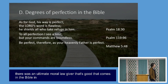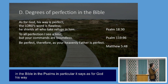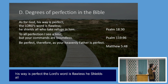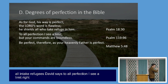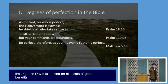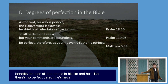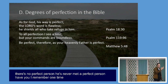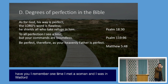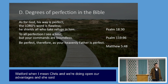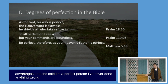How would we ever be able to measure morality unless there was an ultimate moral law giver? That's God. In the Psalms it says: 'As for God, his way is perfect; the Lord's word is flawless.' David says: 'To all perfection I see a limit' — he looks at all the people in his life and thinks, there's no perfect person. I remember meeting a woman in Watford who said she was a perfect person and had never done anything wrong in her whole life.